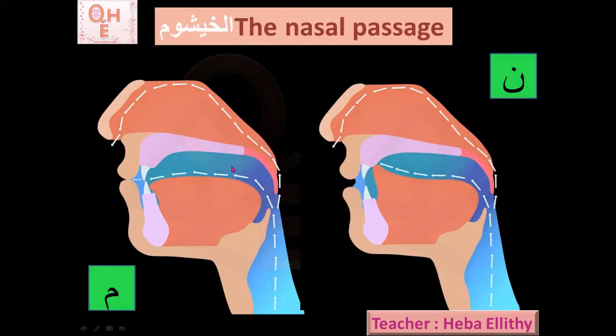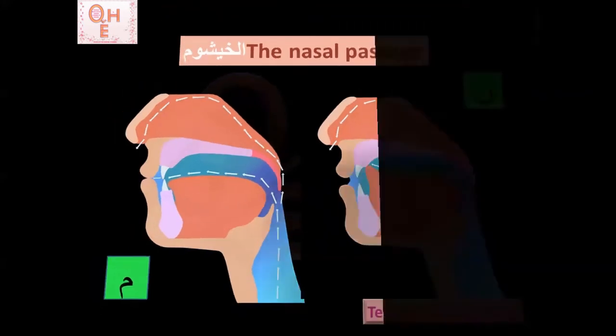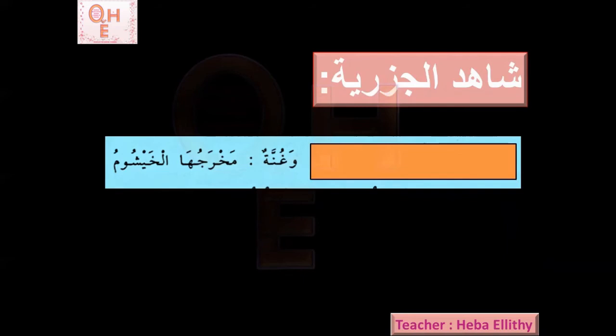The Shahid from al-Jazariya for this: 'Wa gunnatun makharajuhal khayshu' — and there is a ghunna, it comes from the Khayshum, the nasal passage. Examples for the ghunna: I can use any example that has noon or meem in it, no matter what kind of noon, no matter what rules of noon or meem apply.